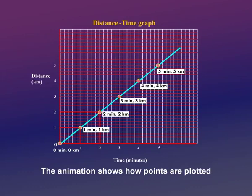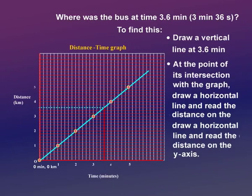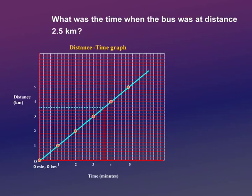On the y-axis we have distance and on the x-axis we have time. Now let us see from this graph where the bus was at time 3.6 minutes — that is, three minutes and thirty-six seconds. To find this, we draw a vertical line at 3.6 minutes. At the point of intersection with the graph, we draw a horizontal line and read the distance on the y-axis.